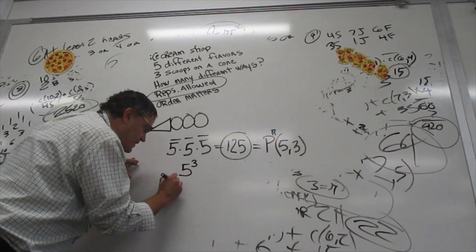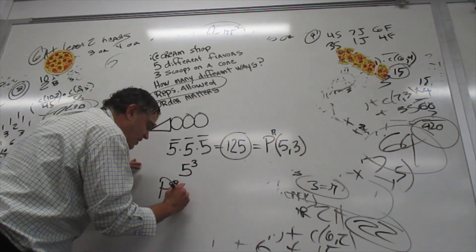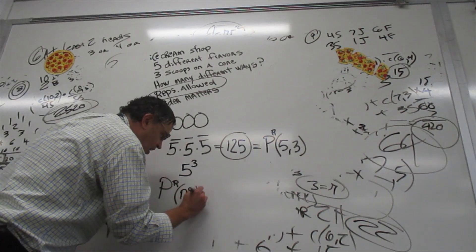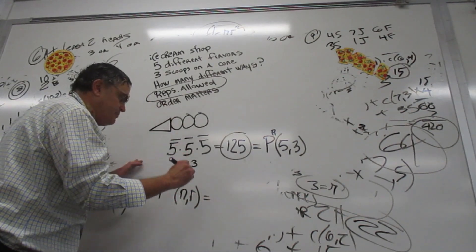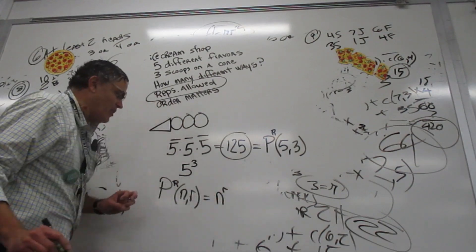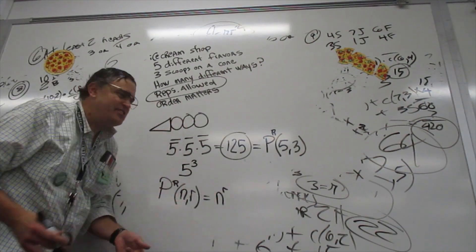So your formula for permutations where reps are allowed, n pick r, is going to be n to the r power. Or you can just do the slots.